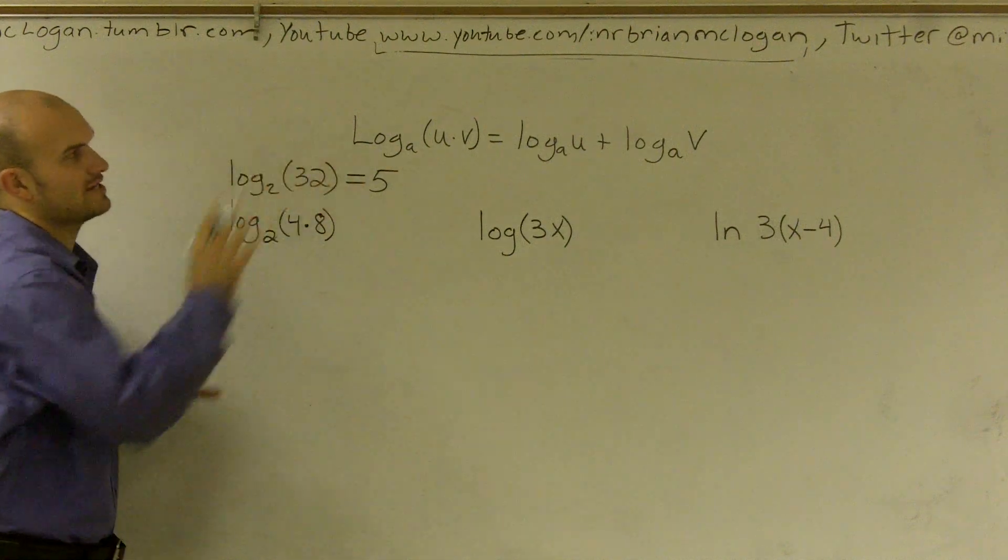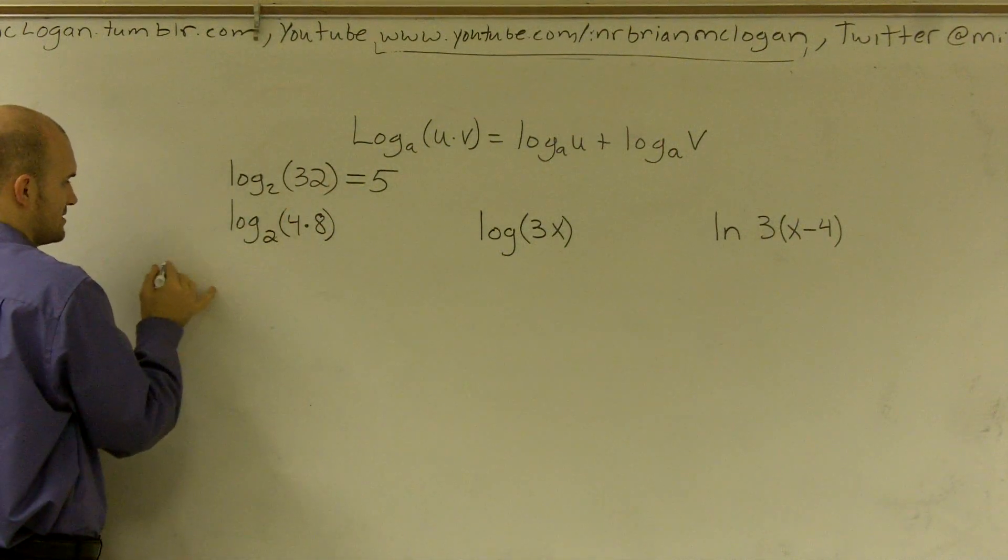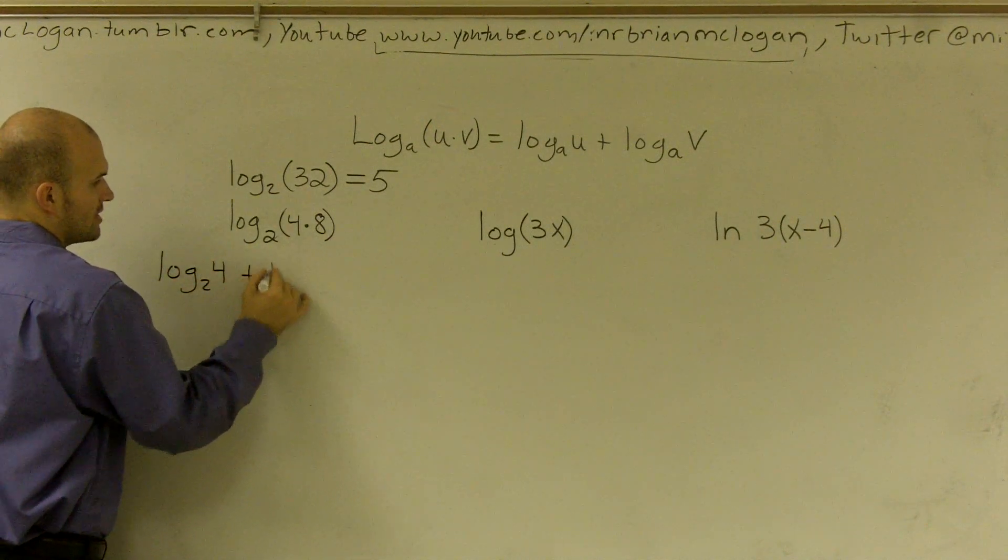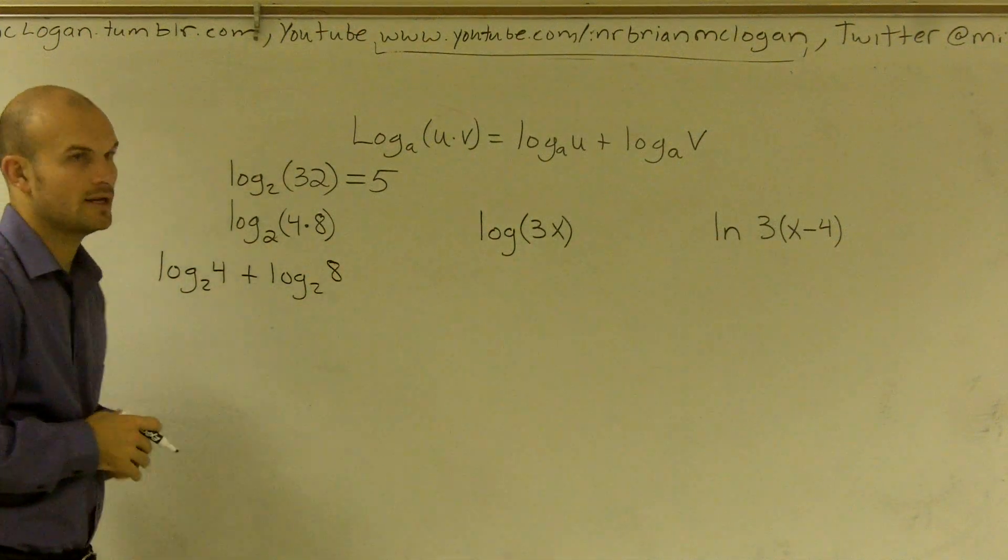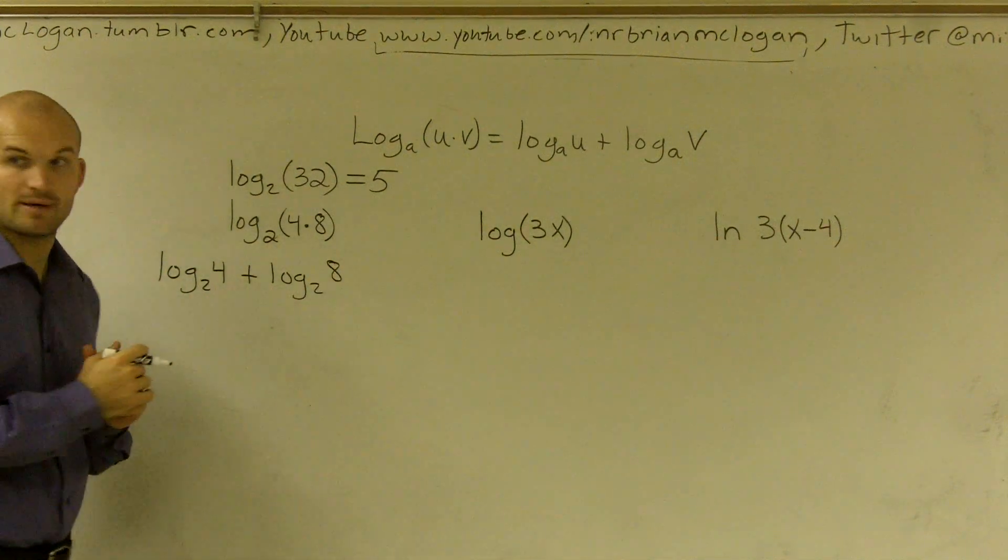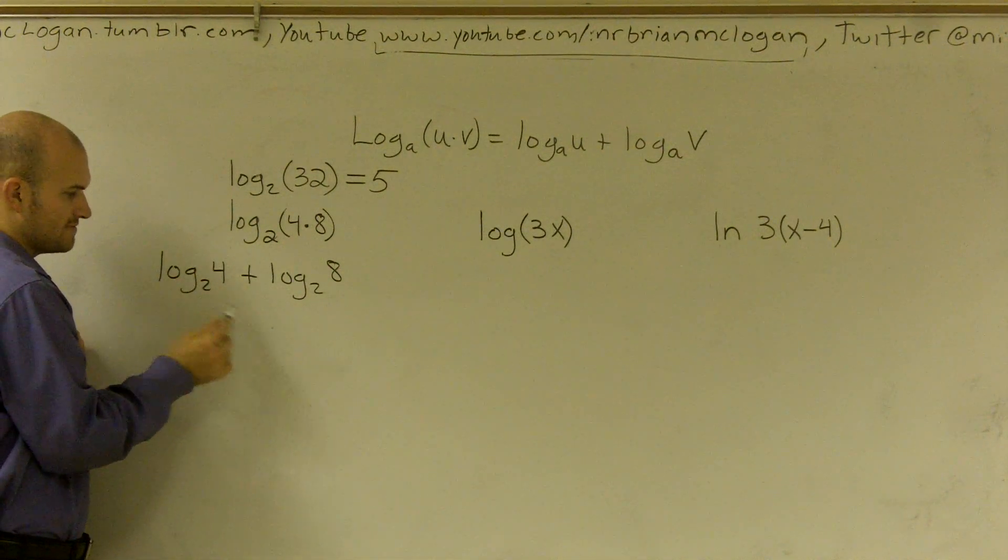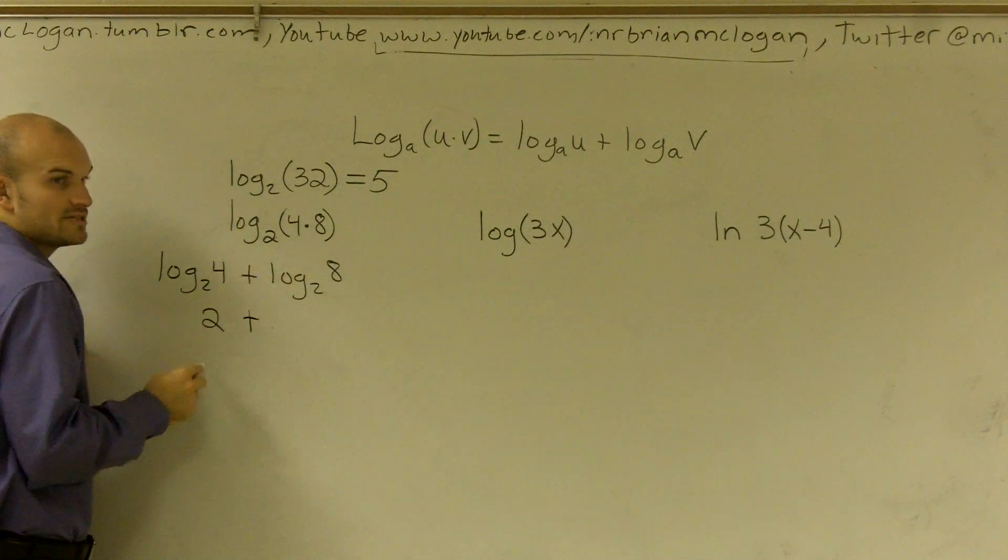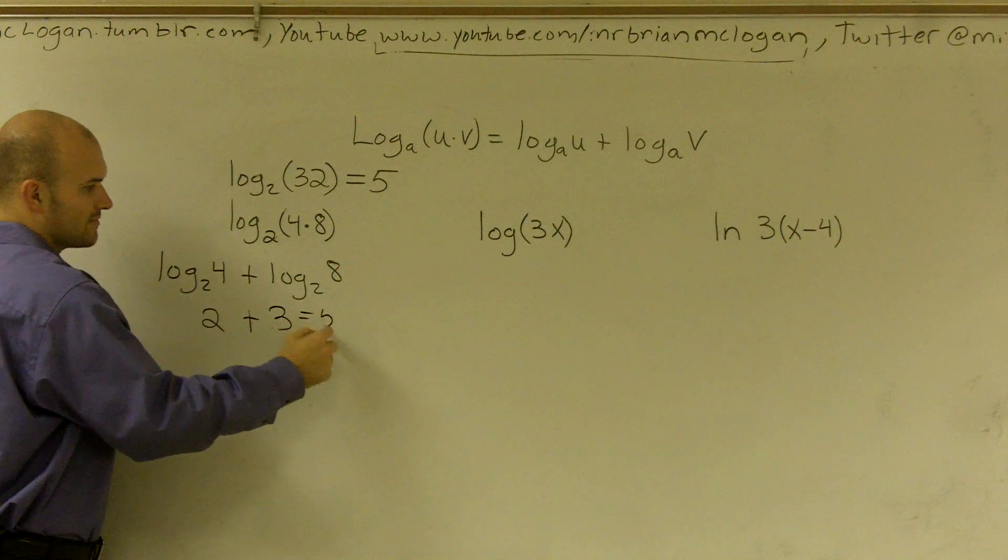Let's use the expansion property and see how this works. If I expand this, I'd do log base 2 of 4 plus log base 2 of 8. We can evaluate both of these logs. Log base 2 of 4 is 2, plus log base 2 of 8 is 3. So 2 plus 3 equals 5.